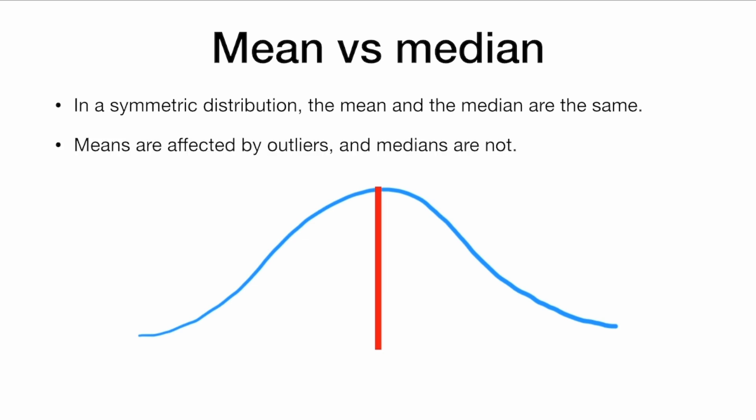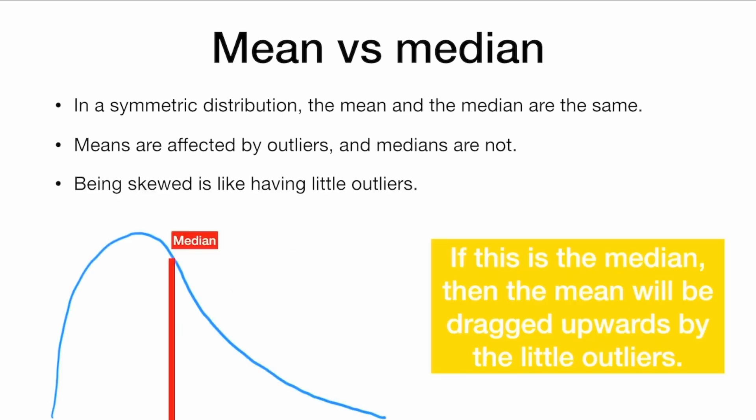Means are affected by outliers and medians are not. And this is going to help us remember how the mean and the median compare in skewed distributions.